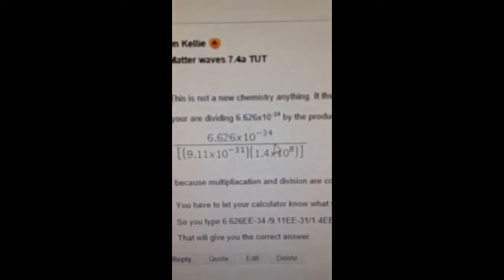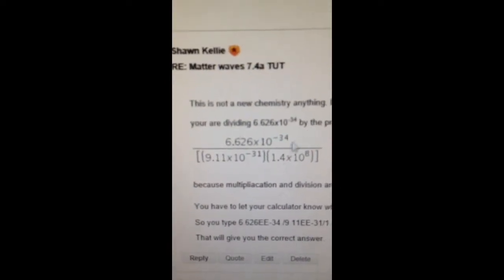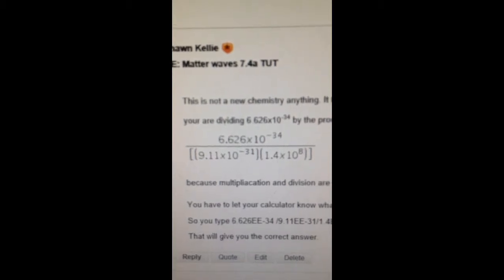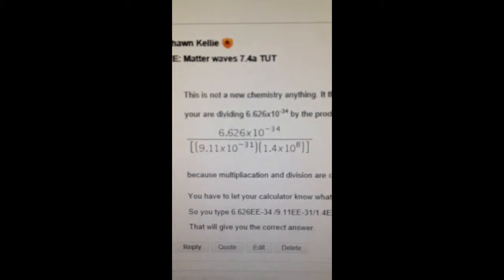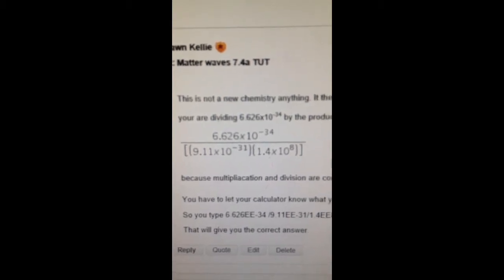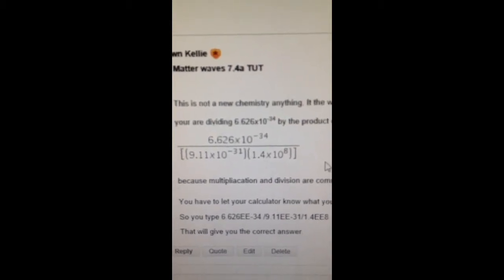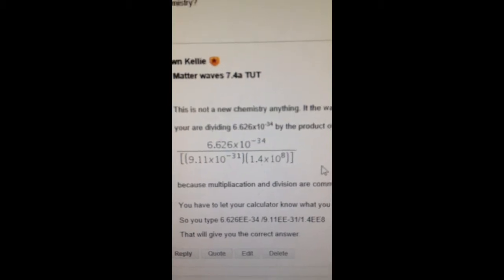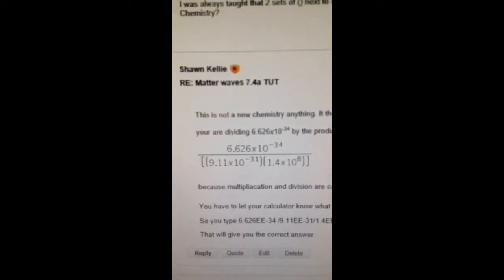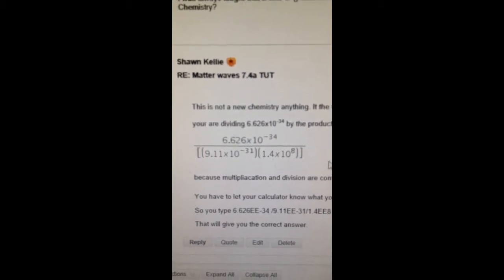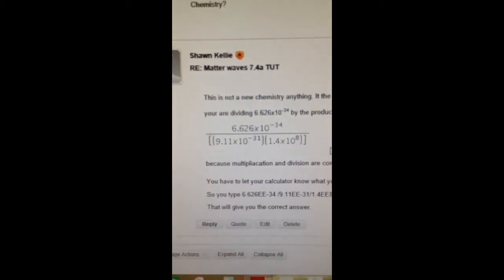All right, I've got some people who are having trouble getting this problem into their calculator: 6.626 times 10 to the negative third divided by 9.11 times 10 to the negative 31st divided by 1.4 times 10 to the 8. I'm going to show you how to put it into your class calculator. Write down the problem so we're on the same page because that's what I'm going to put into the calculator.